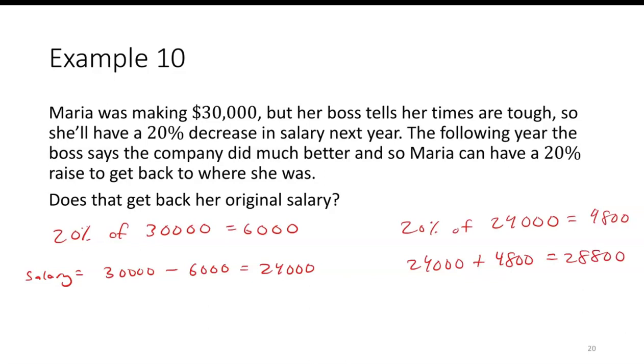So she's actually still making less than she did originally. She made $30,000, but a 20% decrease dropped it to $24,000. And then a 20% increase of that increased it to $28,800.